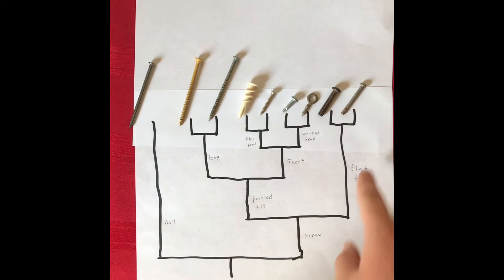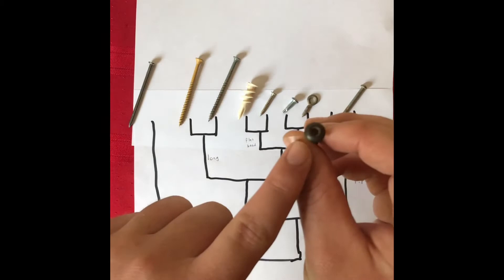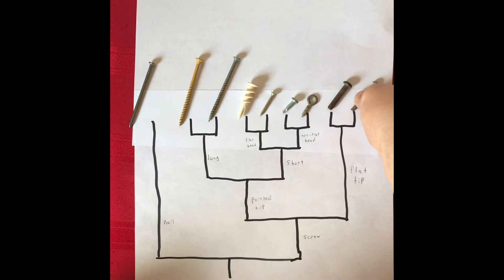Later on we see the divergence between the pointed tip and the flat tip phenotypes. The flat tip phenotypes diverged once more into two separate phenotypes: the Allen wrench head and the Phillips head.